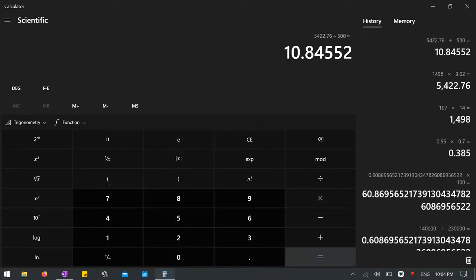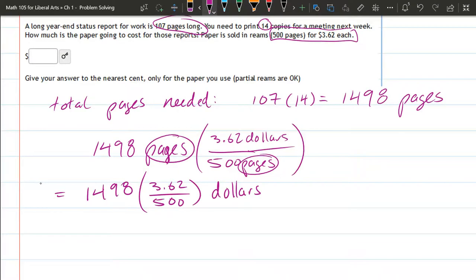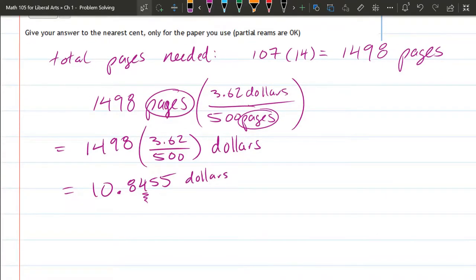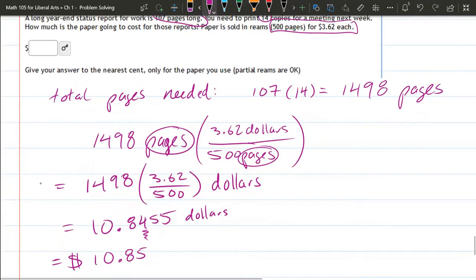And so that's 10.8455 dollars. Now, nearest cent. So I want to round to this digit here. Does that go up or does it stay? Well, we have the next digit, so five, so it's 8.5. And we'll put the dollar sign at the front like most people would. There we go. 10.85.